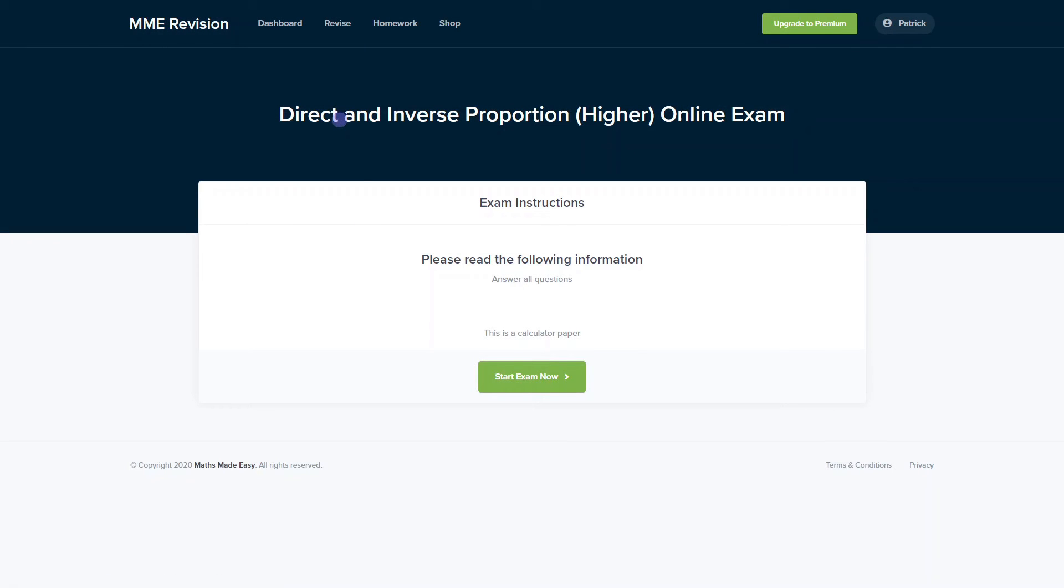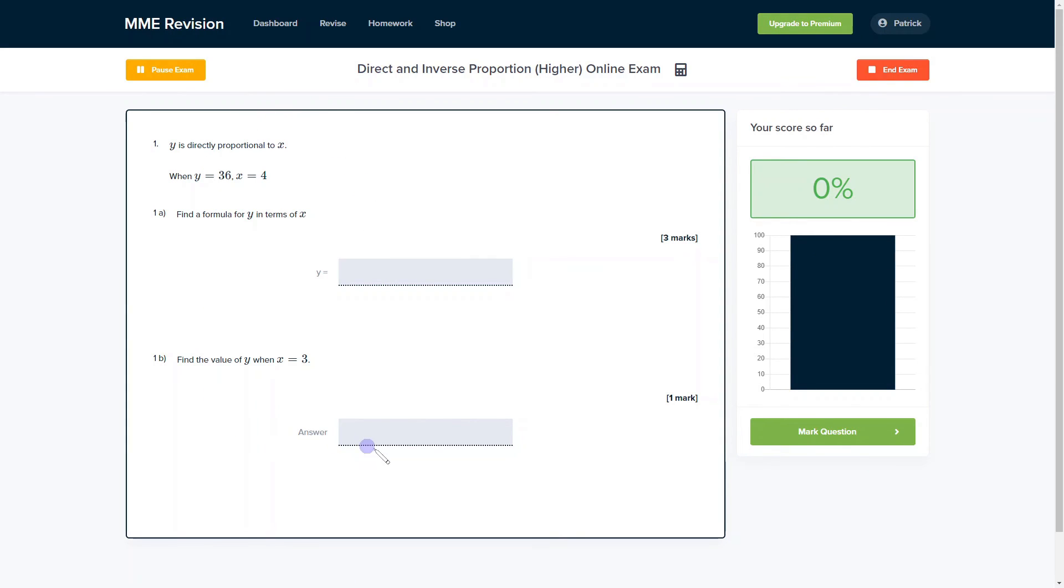If you want to get some practice with harder direct and inverse proportion questions, why not have a go at our online exam? It's available through our revision platform. You'll find loads of different questions to try, and you get instant feedback on each one. This will allow you to keep track of the areas you're weakest at and show you where you can improve. If you're interested, click the link below.